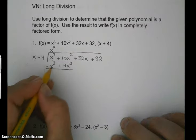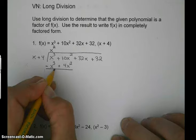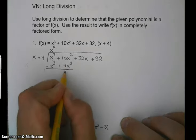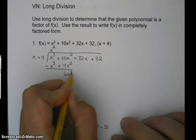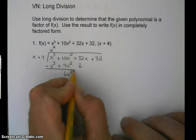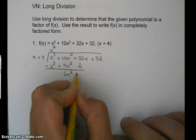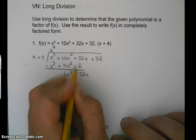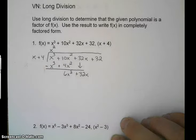So x cubed minus x cubed, so those cancel. 10x squared minus 4x squared is 6x squared. And then we bring down the next term. Don't forget to bring down the sign. In this case, it's plus or positive.